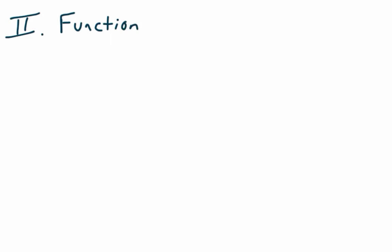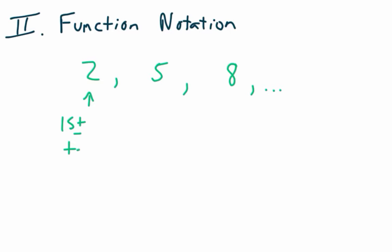Roman numeral two: function notation. Here's what we're trying to do — find a way to write out sequences quickly, instead of saying the first term is this and to find the next term you add 8, or something like that. What they often will do is use a letter — often A for an arithmetic sequence — and put a little subscript number below it. The subscript is the number down below; it's not A times 1 or A to the first power. It's just 'the first A.'